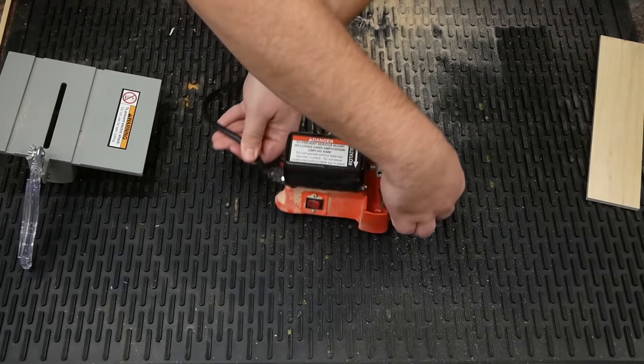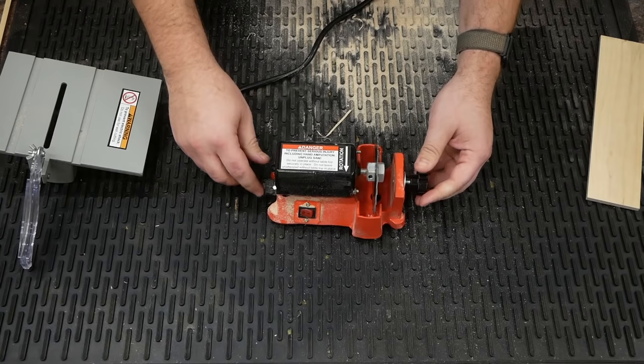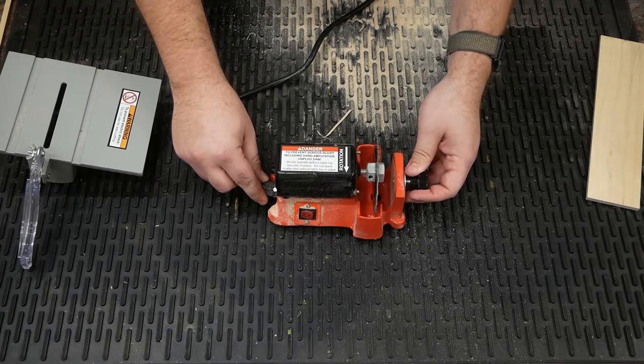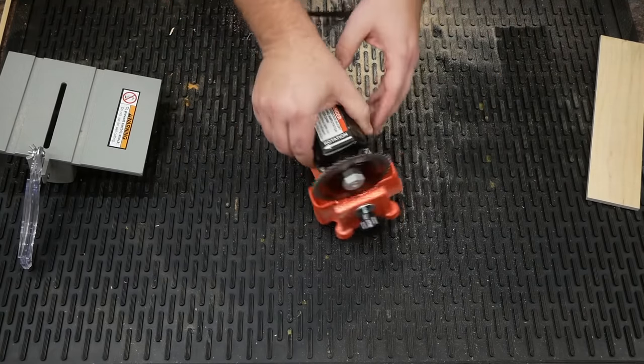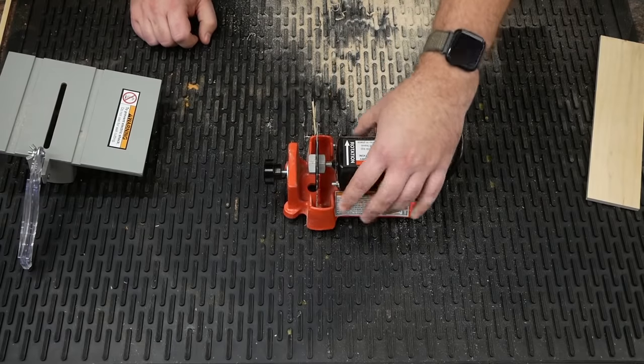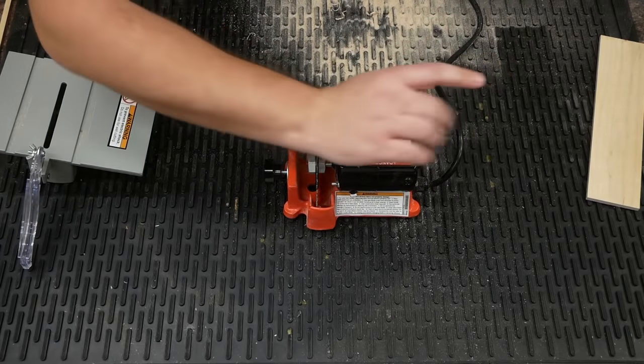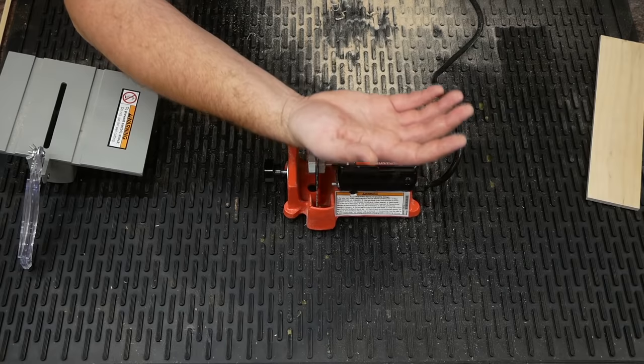Now what's adorable is this warning sticker here to prevent serious injury, including hand amputation. Specifically hand amputation. That's adorable because I don't think that could work. Maybe a finger, but I don't know about a hand.